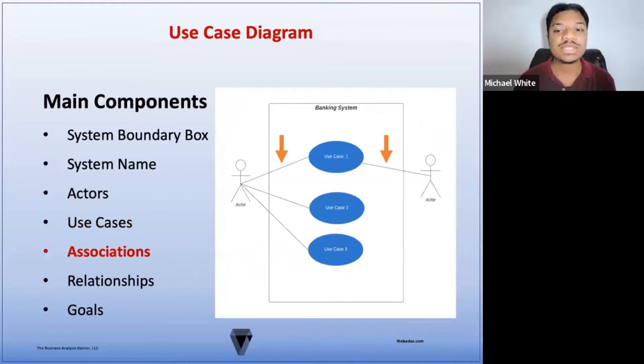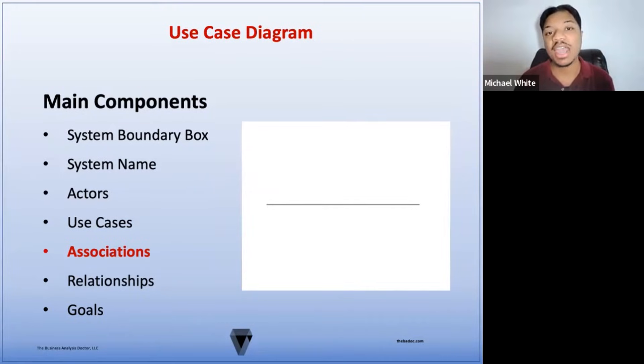Next, we have associations. Association shows the interaction between actors and the use cases. An association line indicates the actor's ability to perform functionality within a use case. One thing to note is that only primary actors can initiate use cases. Secondary actors can only react to a use case. Generally, there will only be association lines between actors and base use cases, not with any sub-use cases. Association lines are solid and do not have arrows because they don't represent system flow. They only represent interaction.